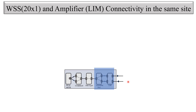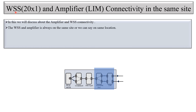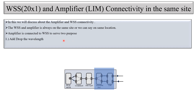In this video we will discuss about amplifier to WSH connectivity. WSH and amplifier are always on the same side, or we can say on the same location. The amplifier is connected to WSH to serve two purposes: first, to add or drop the wavelength, and second, to pass through the wavelength to another WSH and route it to some different direction.